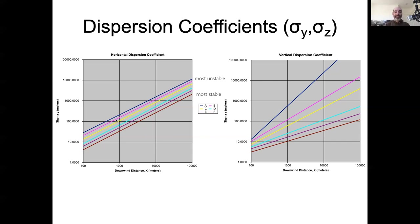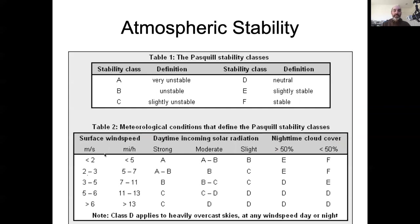That mixing of the atmosphere is truly a continuous process, but we're describing it in terms of six discrete classes just for the sake of parameterization. So we can assign parameters to each of these discrete classes using a lookup table.